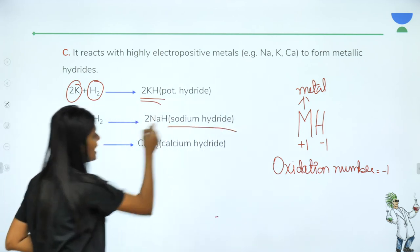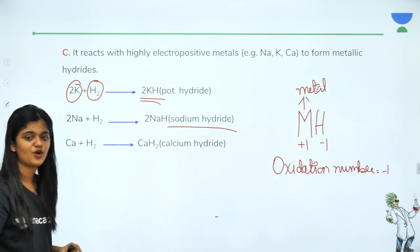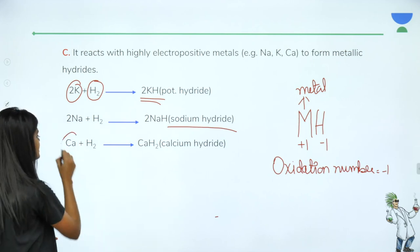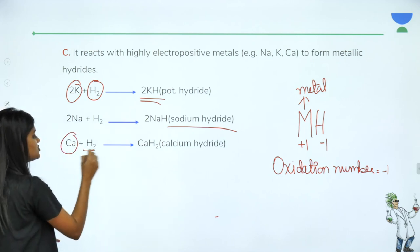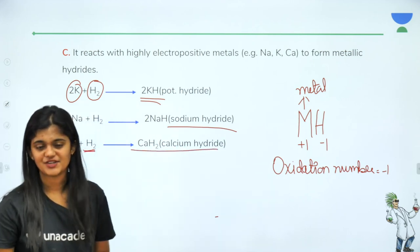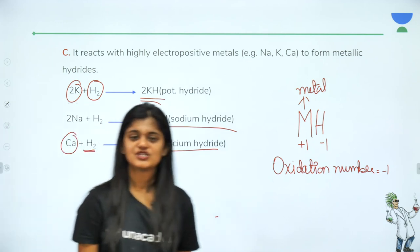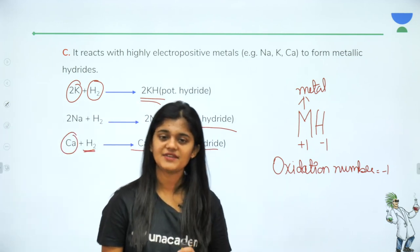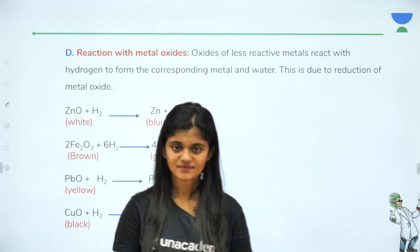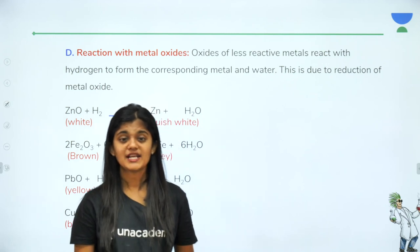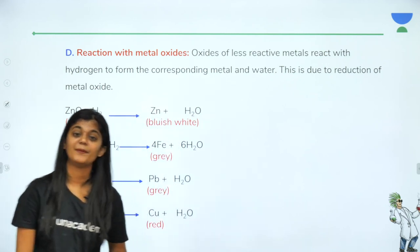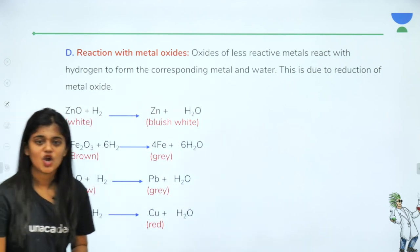Examples of metallic hydrides: sodium hydride (NaH), and calcium reacting with hydrogen gives calcium hydride. Next we look at reaction with metal oxides.